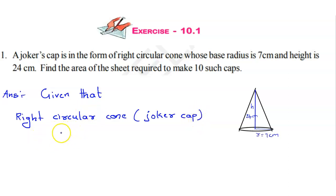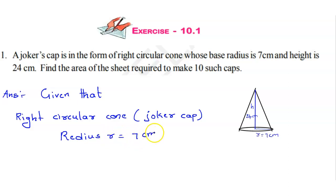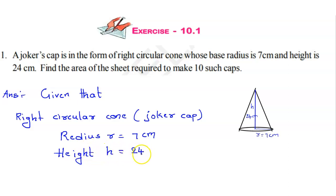The given values are: radius — since radius is half of diameter — r is equal to 7 centimetres, and next, height h is equal to 24 centimetres. This is the data.